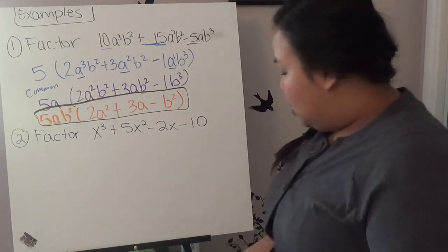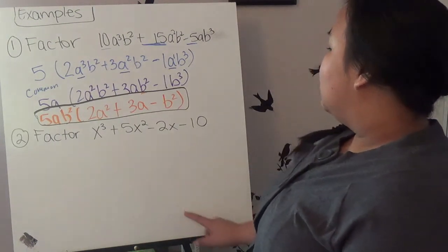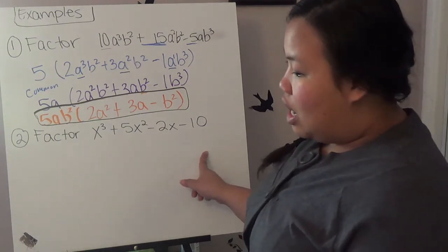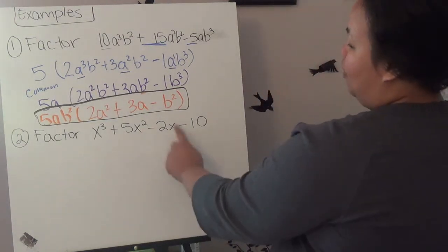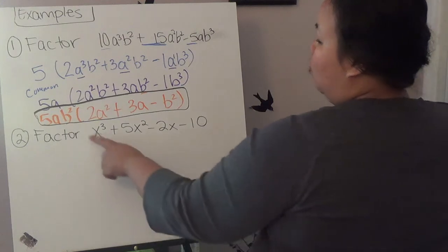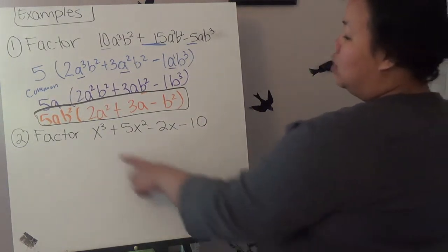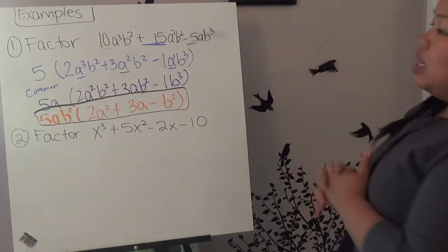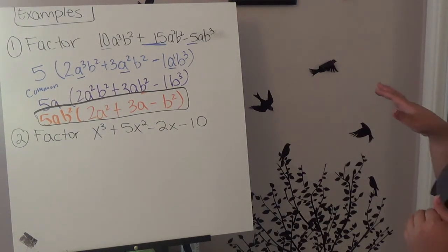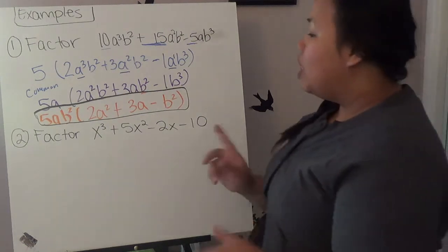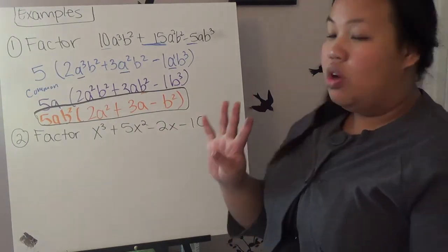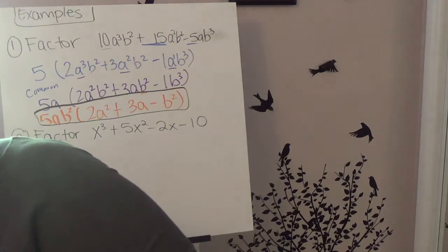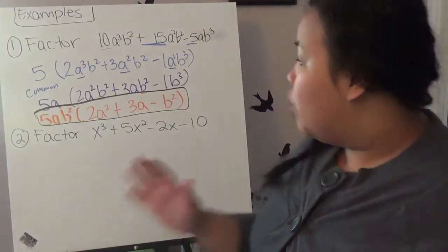The next example is x cubed + 5x squared − 2x − 10. Can we take anything out? Every term has x's except the constant 10, so we can't factor out x. The coefficients are 1, 5, 2, and 10, and since 1 is there we can't take out a common number either. So step 2 doesn't work. We count the terms: 1, 2, 3, 4 terms. With four terms, we go to page 349, and the only option for four or more terms is grouping.